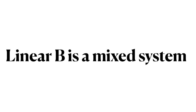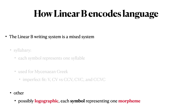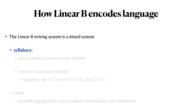Linear B is a mixed system. What does that mean? It means that there are aspects of a logography and aspects of a syllabary. The possibly logographic symbols likely represent one morpheme each. We are going to focus mostly on the syllabary aspect of the Linear B writing system, which is what our textbook author Richard Sprout refers to when he talks about Linear B in Chapter 3 of the textbook Language, Technology, and Society. In a syllabary, each symbol represents one syllable.